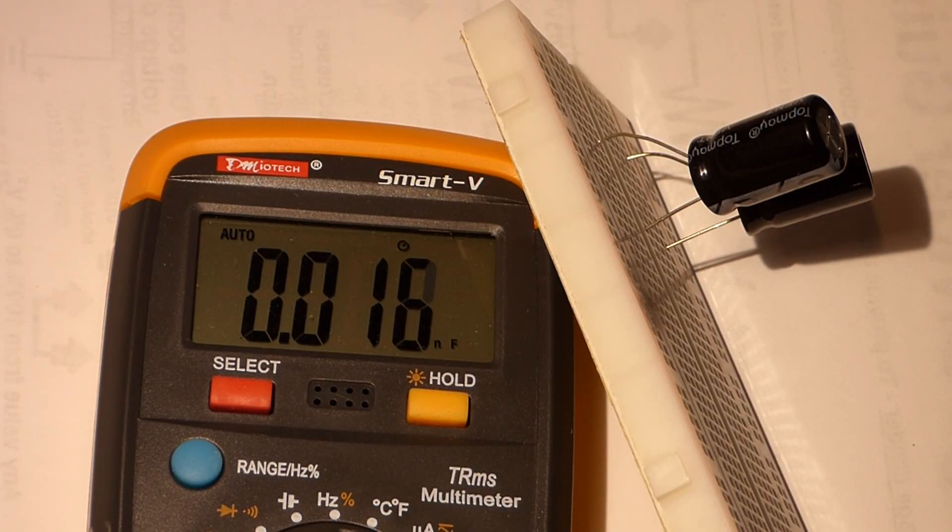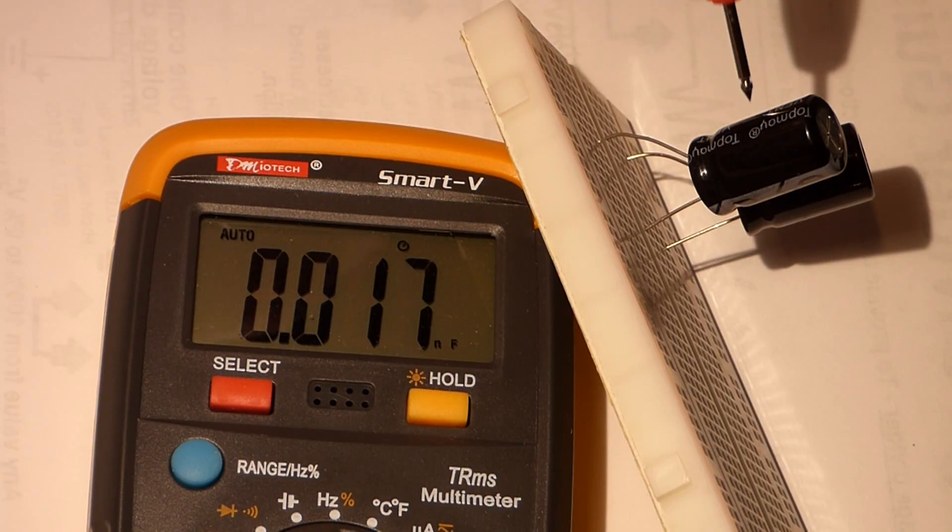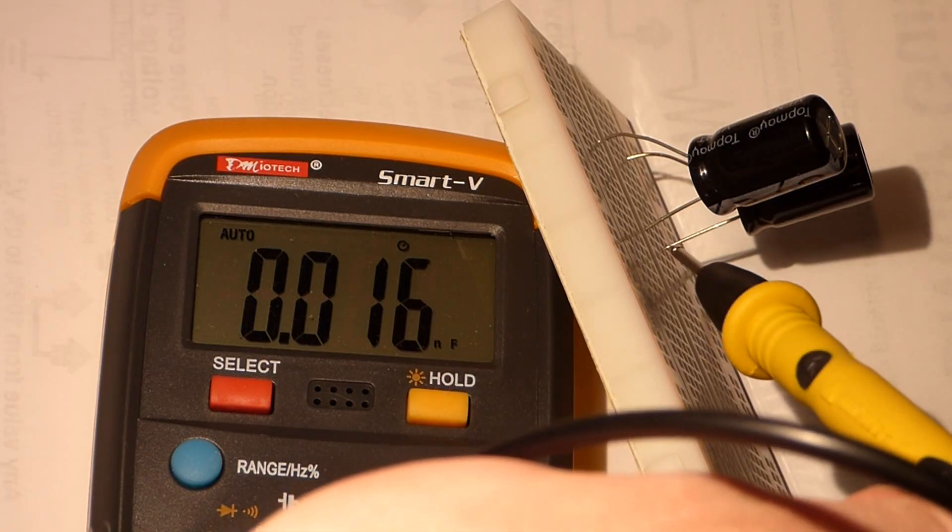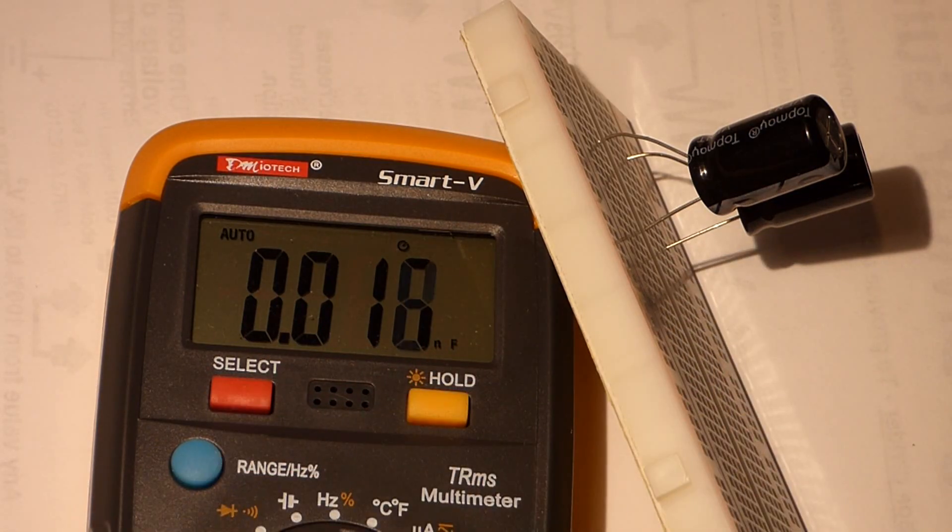So now I took those same two capacitors and I put them in parallel. And that means the positive of both of these capacitors are connected. They're on the same row. And then the negative of these two capacitors are also connected.